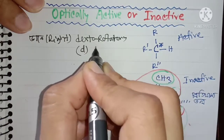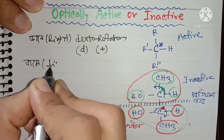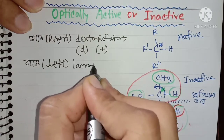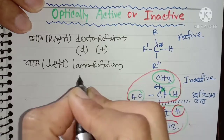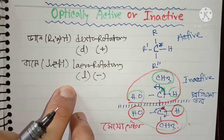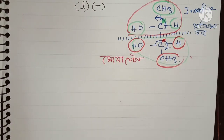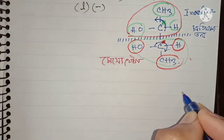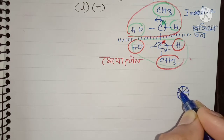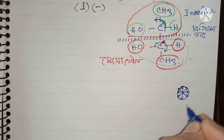যতটুকু ডানে ঘোরা ততটুকু বামে ঘোরা — এই জন্য সামগ্রিকভাবে এগুলো প্রকাশ করি। মাঝে মাঝে আমরা plus দিয়ে প্রকাশ করি, আর যদি বামে ঘোরায় তাহলে সেটা হলো levo rotatory, এটা আমরা L দ্বারা প্রকাশ করি, কিংবা minus দ্বারা প্রকাশ করি।